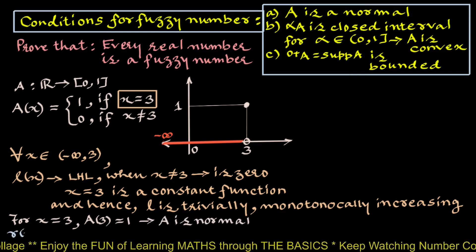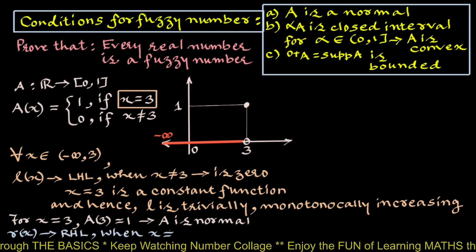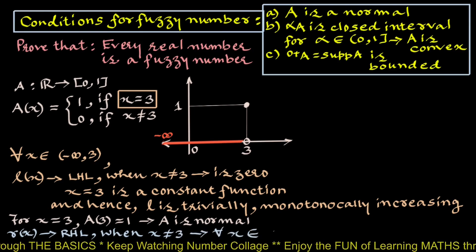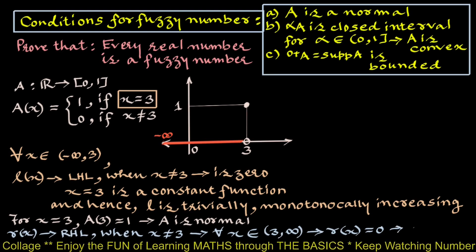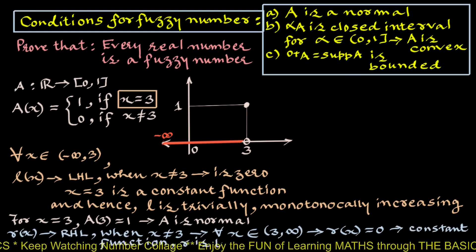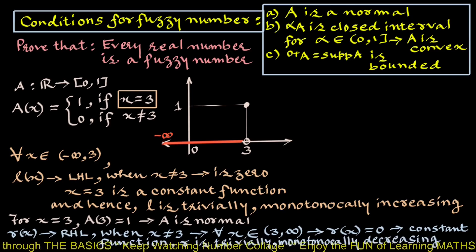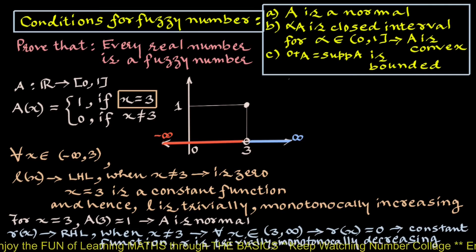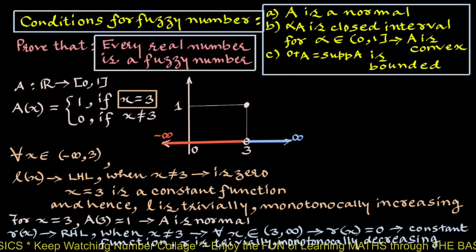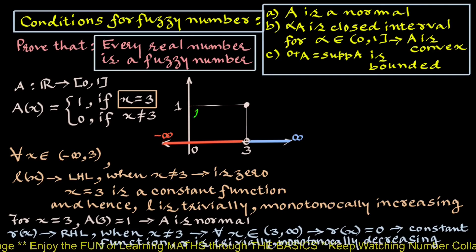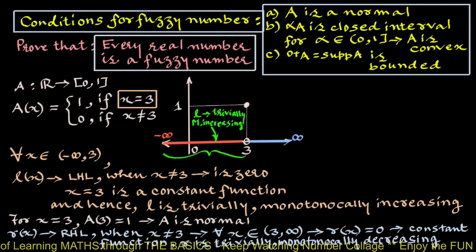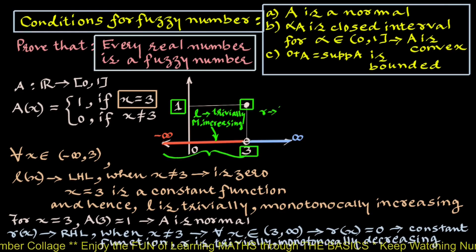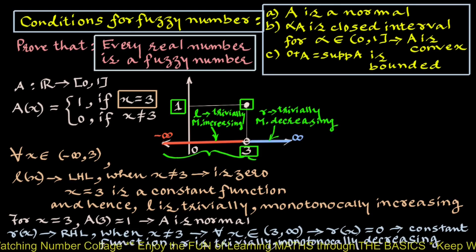The right-hand limit R(x) for all x in the open interval (3, infinity) is 0, and being a constant function, R is trivially monotonically decreasing from 3 to infinity. Since all three conditions are satisfied — L is trivially monotonically increasing from minus infinity up to 3, A(3) equals 1, and R is trivially monotonically decreasing just after 3 to infinity — every real number is a fuzzy number.